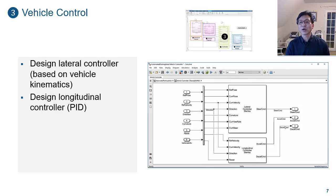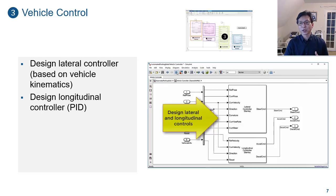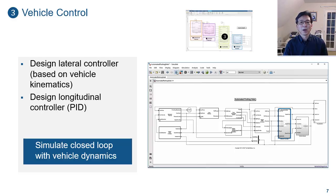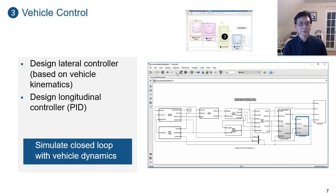The vehicle control subsystem contains a lateral controller as well as a longitudinal controller to regulate the pose and velocity of the vehicle, respectively. The vehicle controller then applies to the vehicle dynamics model.